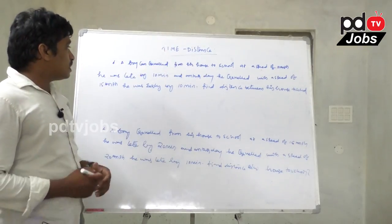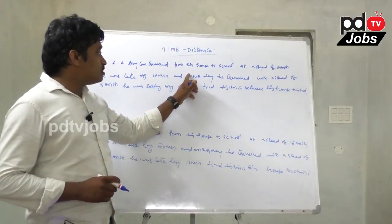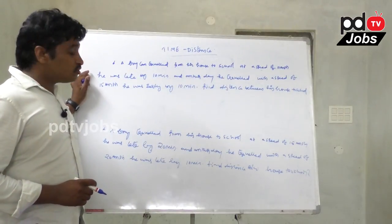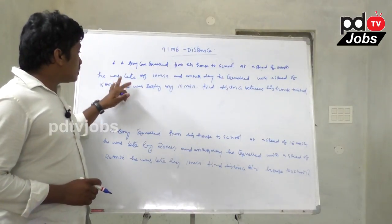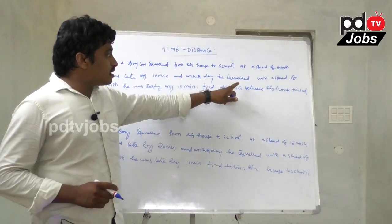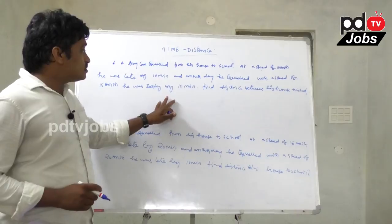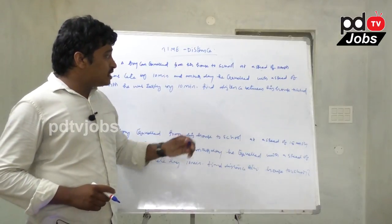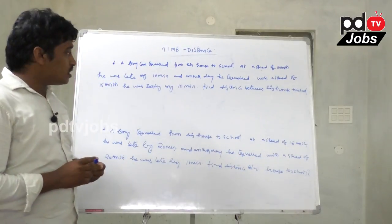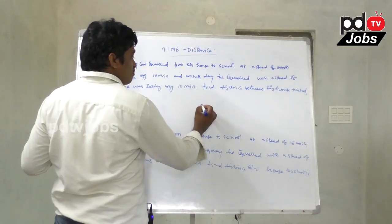Here is another example on time and distance. A boy can travel from his house to school at a speed of 10 kmph and was late by 10 minutes. Another day he traveled with a speed of 15 kmph and was early by 10 minutes. Find the distance between his house and school.